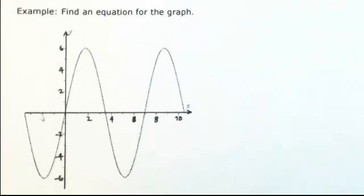Suppose you're given a graph and you're asked to find an equation. The first thing I would ask is, what kind of a graph do you have? In this case, it's clear to see that it's either going to be sine or cosine.